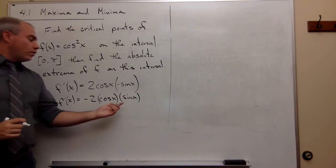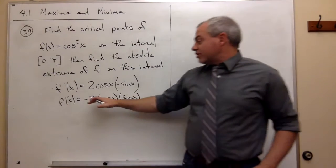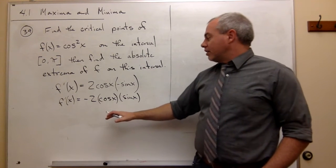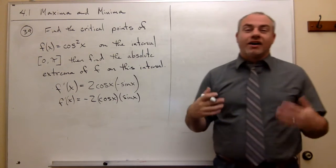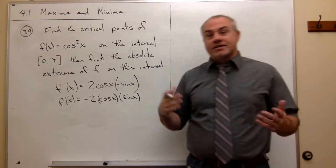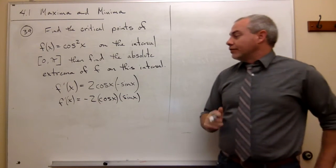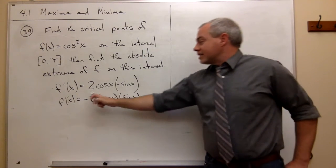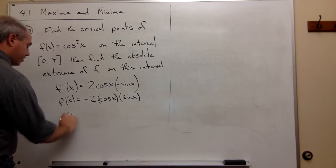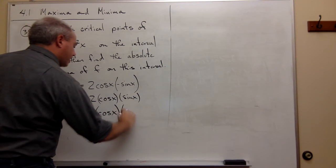We're interested in where this is zero or undefined. There's no denominator in this function, so it's never going to be undefined. Cosine is a nice continuous function, sine is a nice continuous function — this derivative exists for any value of x. So we're just concerned with where it equals zero. Setting it equal to zero: 0 = −2·cos(x)·sin(x).